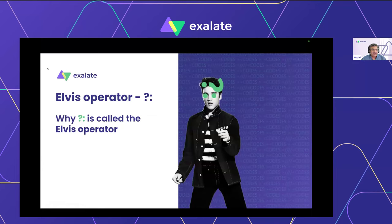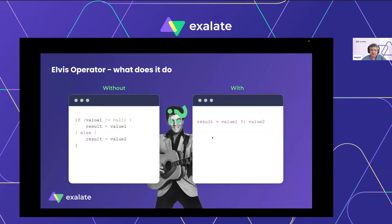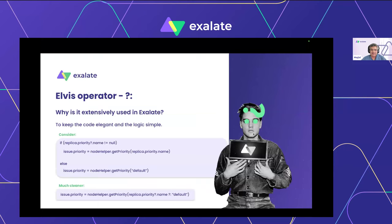Let's quickly talk about the Elvis operator — think of it as providing default values. It's a binary operator taking two operands. It picks up the first value as long as it exists, but if that value is null it falls back to a second default value. If value one exists it gets assigned; if null, it falls back to value two. I use it a lot in Exalate scripts to ensure there's always a default value so scripts don't break.